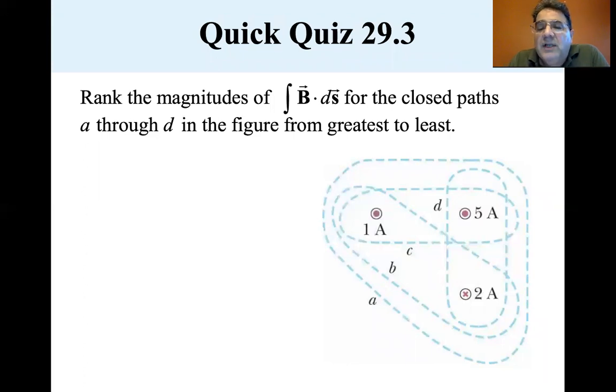C, let's see where C goes. Well, that's one amp and five amps. So C is six and D, let's see D is five amps and two amps. So D is three. So I would rank them as C A D B. Yes, that's correct.